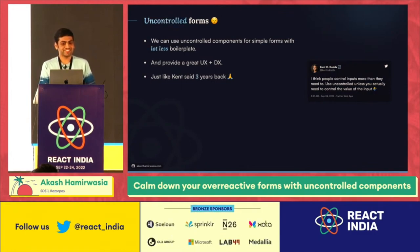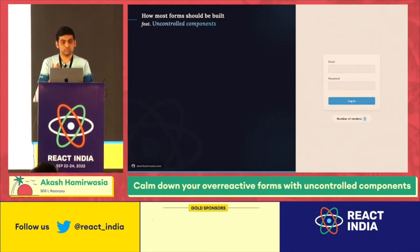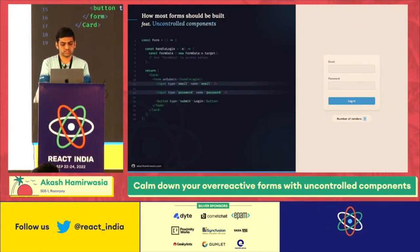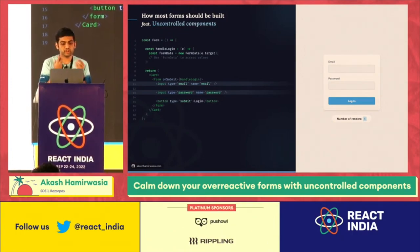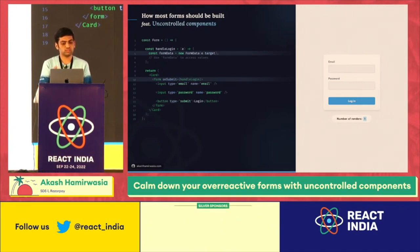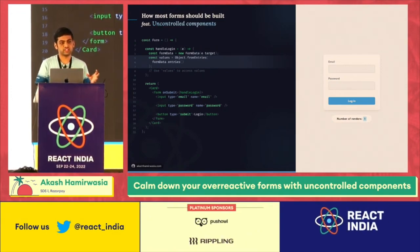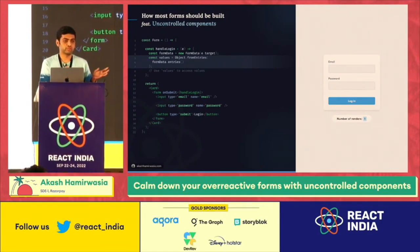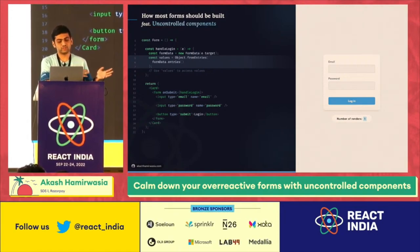So now let us look at how most forms out there should be built using uncontrolled components. Same simple login form, two inputs — email and password. Notice how we are not setting value or onChange at all. It is just the simple name field that we assign so we can figure out which input has which value. Within our onSubmit handler, we get all the form data by simply using the FormData API. The FormData API takes a form element and gives you all the data about the form. You can convert that to a simple object where the key is the name of the input and the value is the value in the input field.